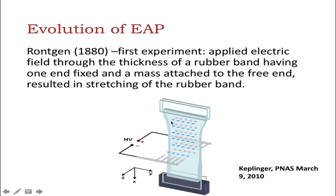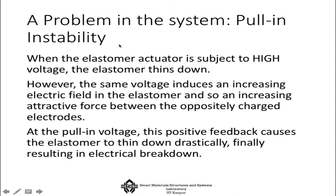This experiment is also unique because there was no electrode — the charge was directly provided to the naked rubber. In such systems there is one danger known as pull-in instability. If an elastomer actuator is subjected to high voltage it will thin down; however, the same voltage induces an increasing electric field and an increasing attractive force between the oppositely charged electrodes. This pull-in voltage creates a positive feedback that causes the elastomer to thin down drastically, finally resulting in electrical breakdown of the system.